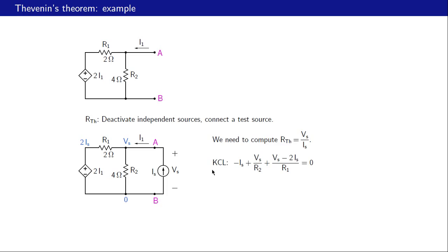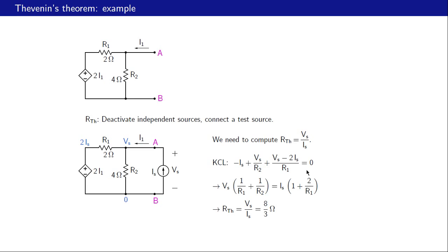At node A we have three currents: Is, the current through R2, and the current through R1. Is is entering the node so we take that as minus Is. The current (Vs minus zero) divided by R2 is leaving the node, so that is plus Vs over R2. The current through R1 is (Vs minus two·Is) divided by R1. All three currents sum to zero. After simplifying, we obtain Rth as Vs divided by Is, which equals eight over three ohms.